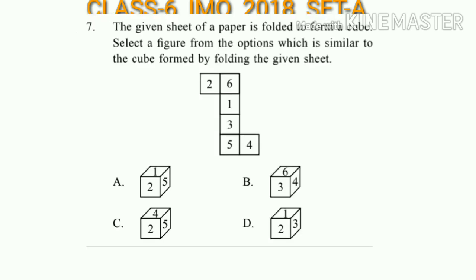Question number 7: The given sheet of paper is folded to form a cube. Select a figure from the options which is similar to the cube formed by folding the given sheet. The paper has faces labeled two, six, one, three, five, and four. If we fold it to form a cube, the cube will be option D.